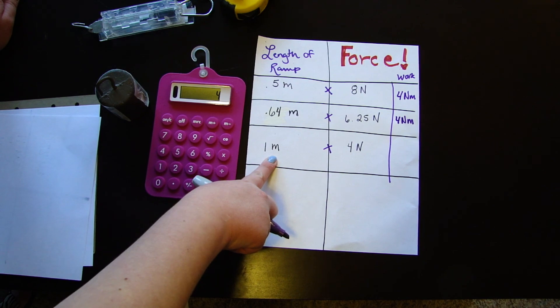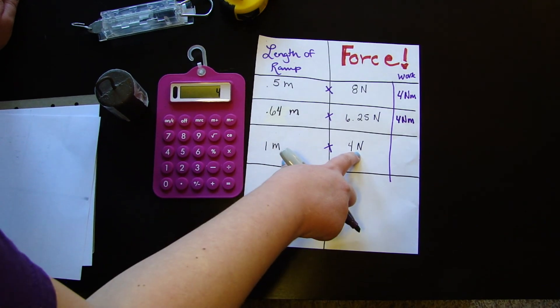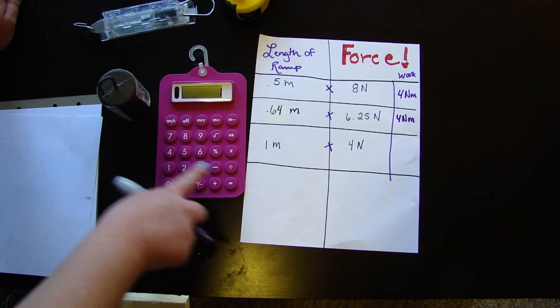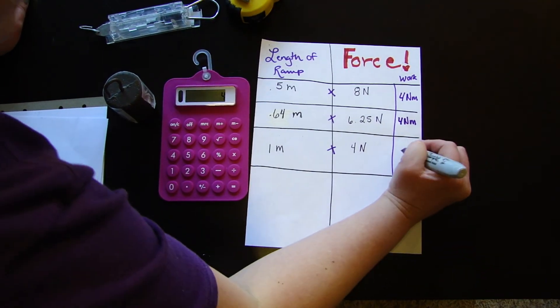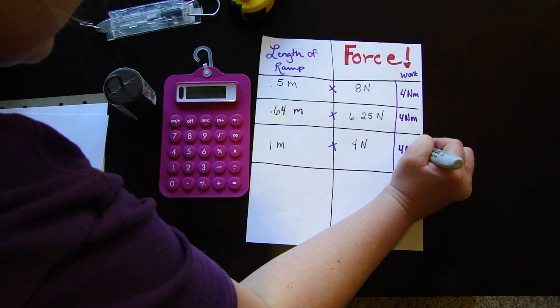And finally, this is pretty simple. 1 times 4 we know is 4, but just for the sake of doing it on a calculator, 1 times 4 is 4 newton meters.